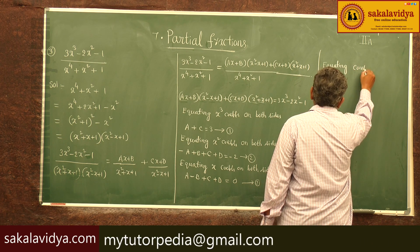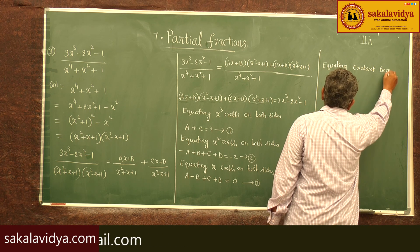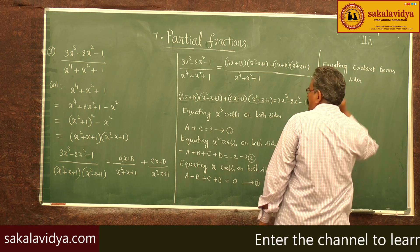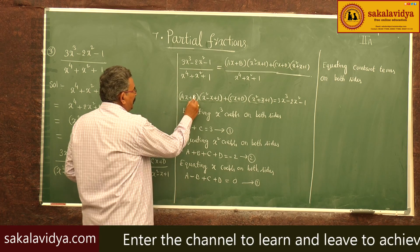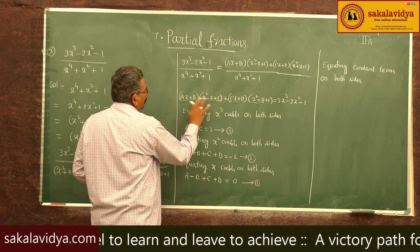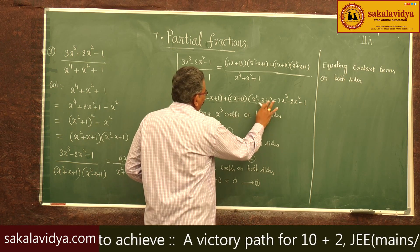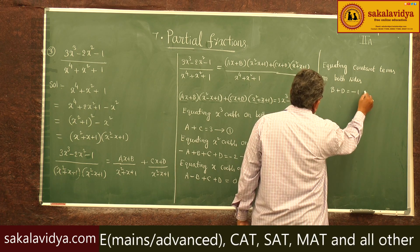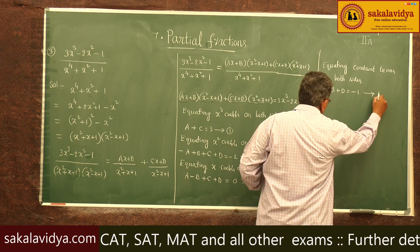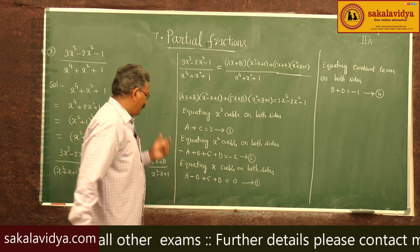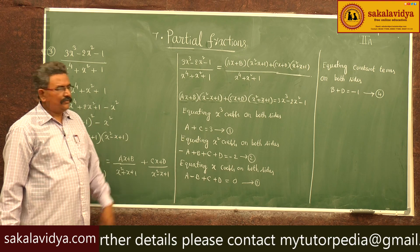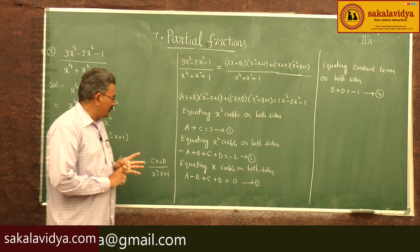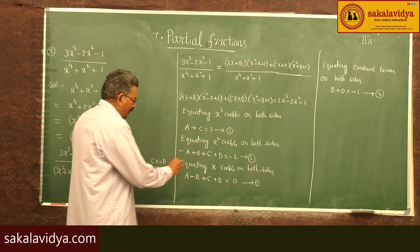Equating constant terms on both sides: b·1 gives b, and d·1 gives d. So b + d = -1 — equation 4. From equations 1, 2, 3, 4 we have to find out a, b, c, d values. Let us substitute the b + d value into equation 2.